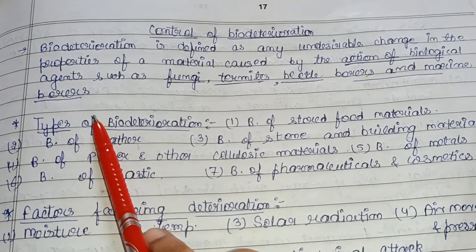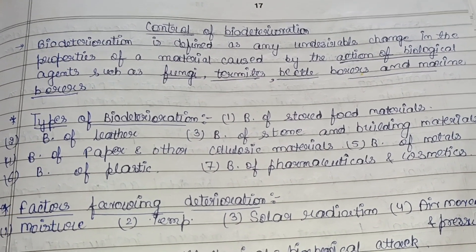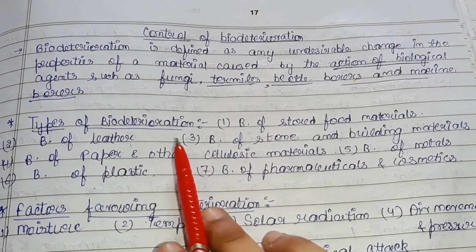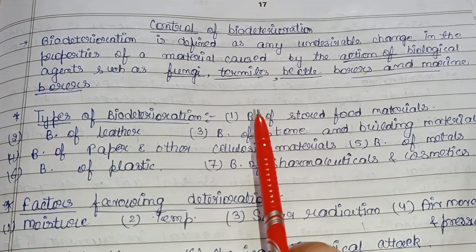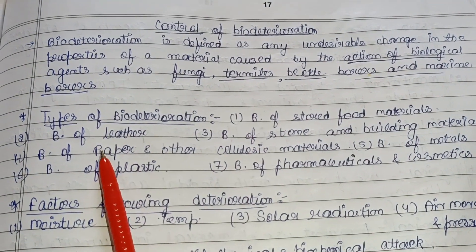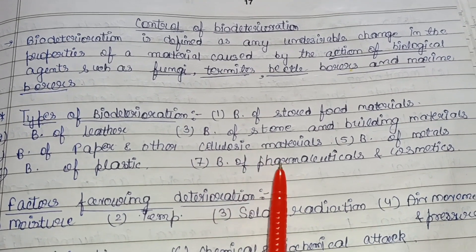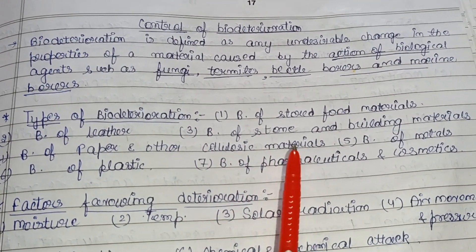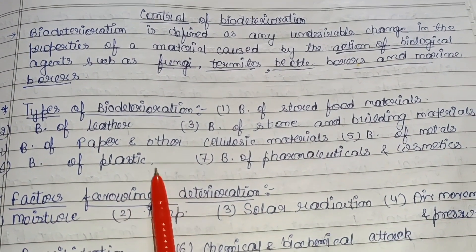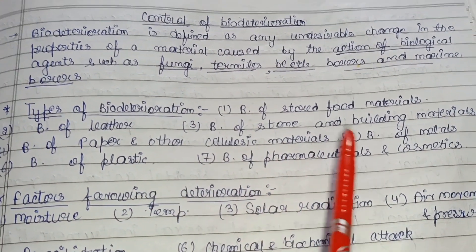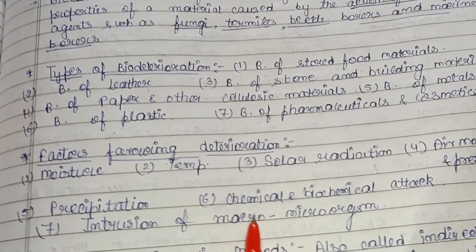Other agents include borers and marine borers. Types of bio deterioration happen in these categories: bio deterioration of stored food materials, leather, stone and building materials, paper and other cellulosic materials (substances containing cellulose), metals, plastics, and pharmaceuticals and cosmetics.